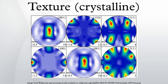In material science, texture is the distribution of crystallographic orientations of a polycrystalline sample.